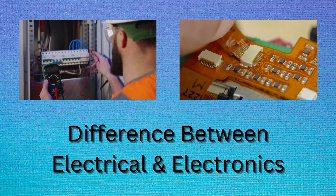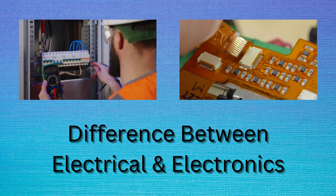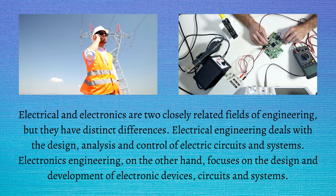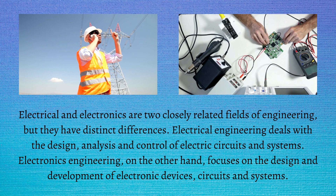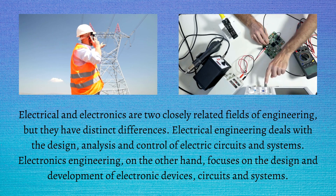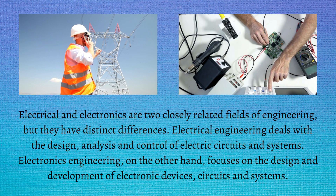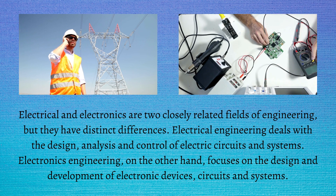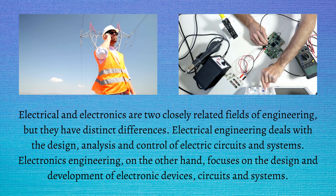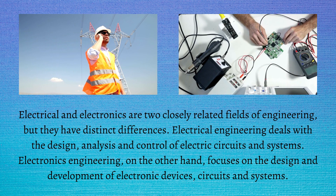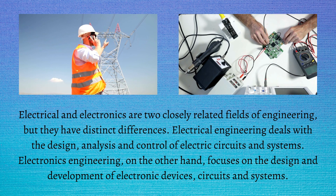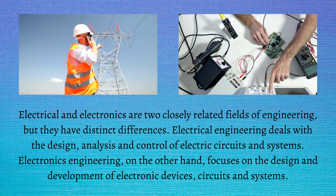The difference between electrical and electronics: electrical and electronics are two closely related fields of engineering, but they have distinct differences. Electrical engineering deals with the design, analysis, and control of electric circuits and systems. Electronics engineering, on the other hand, focuses on the design and development of electronic devices, circuits, and systems.